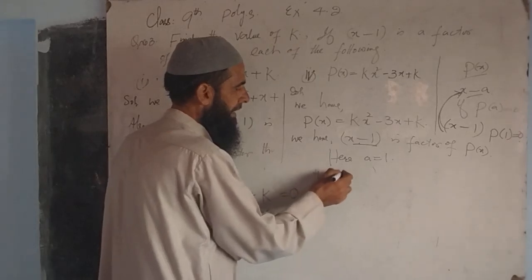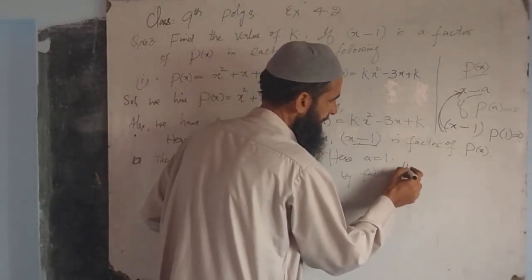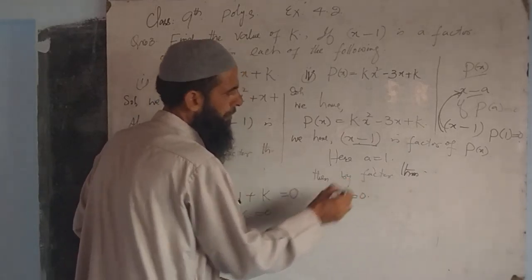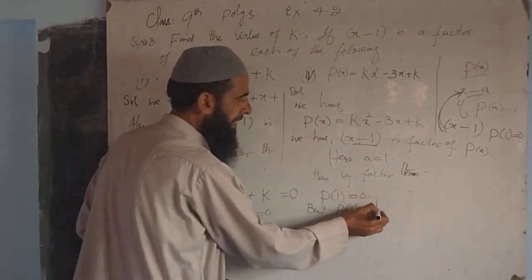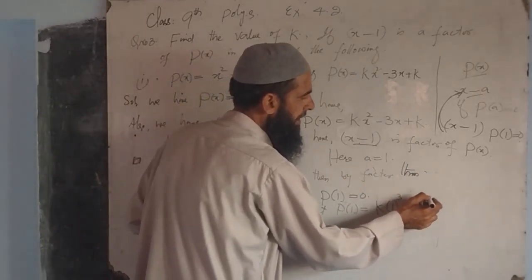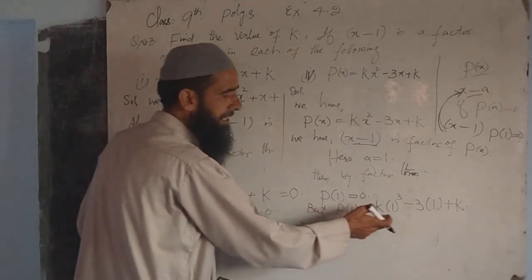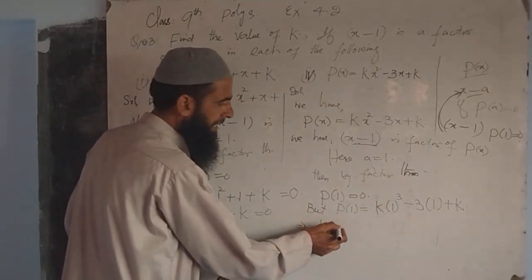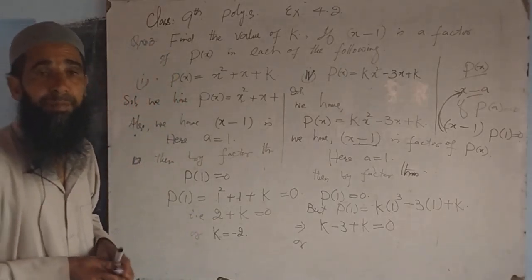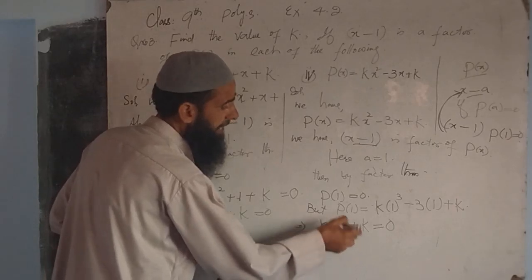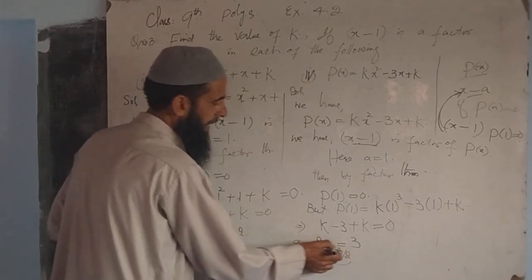By the Factor Theorem, p(1) = 0. Substituting x = 1: p(1) = k × 1³ - 3 × 1 + k = 0. This gives k - 3 + k = 0, which means 2k = 3, so k = 3/2.